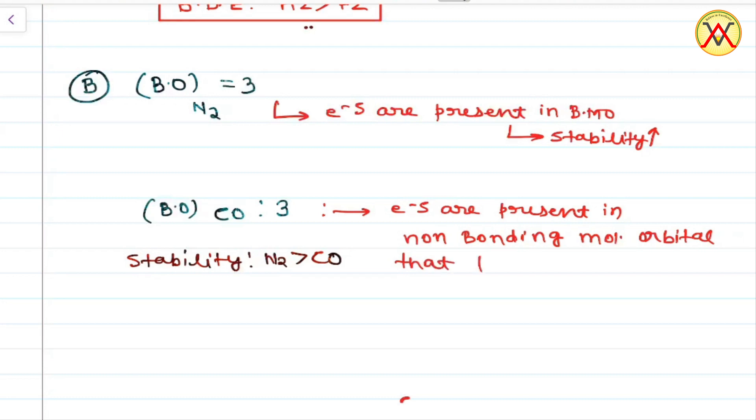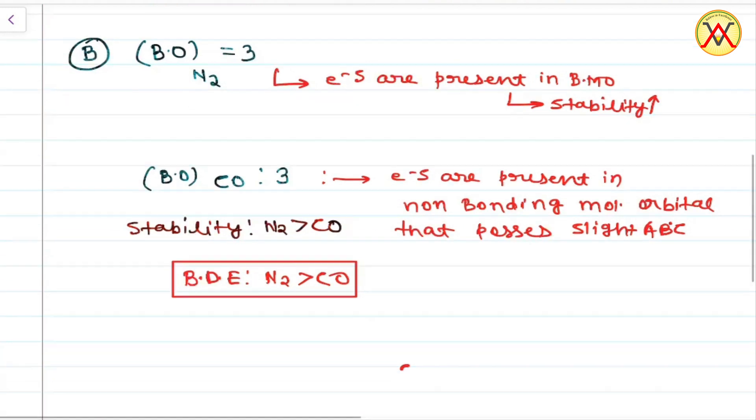anti-bonding character. So due to this, the stability of CO somehow decreases and stability of N2 is greater than CO. So obviously the BDE order would be N2 greater than CO. We have already discussed fluorine and hydrogen,